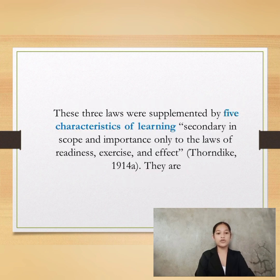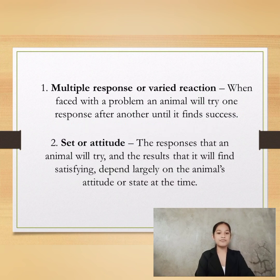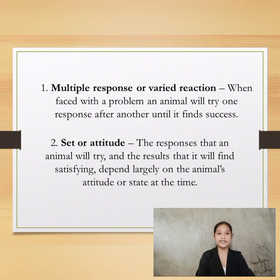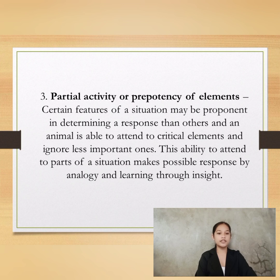These three laws were supplemented by five characteristics of learning. First is multiple response or varied reaction — when faced with a problem, an animal will try one response after another until it finds success. Second is set or attitude — the responses that an animal will try and the results that it will find satisfying depend largely on the animal's attitude or state at the time. Third is partial activity or prepotency of elements — certain features of a situation may be more prominent in determining a response than others, and an animal is able to attend to critical elements and ignore less important ones. This ability to attend to parts of a situation makes possible response by analogy and learning through insight.